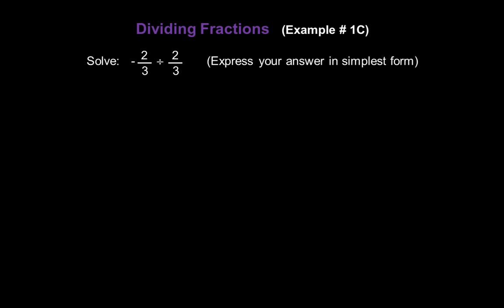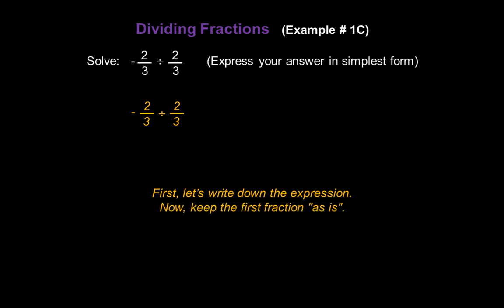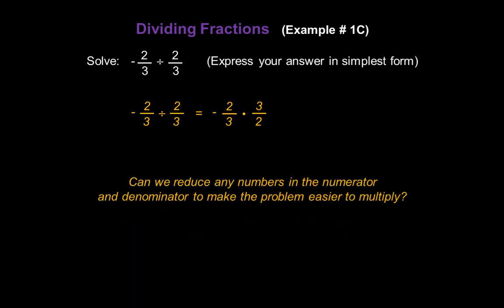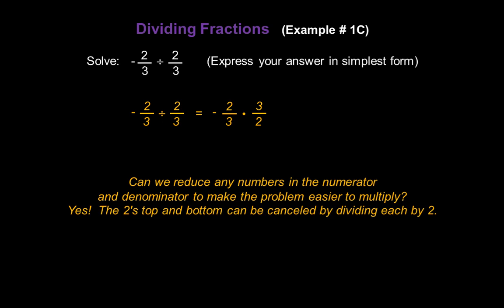Now let's solve negative 2 thirds divided by 2 thirds. Let's write down the expression: negative 2 thirds divided by 2 thirds. Keep the first fraction as is — write negative 2 thirds. Change the operation to multiplication. And flip the second fraction: the reciprocal of 2 over 3 is 3 over 2. Now, can we reduce? In fact, there are a couple of things we can do. The 2s top and bottom cancel by dividing each by 2 — they become 1s.